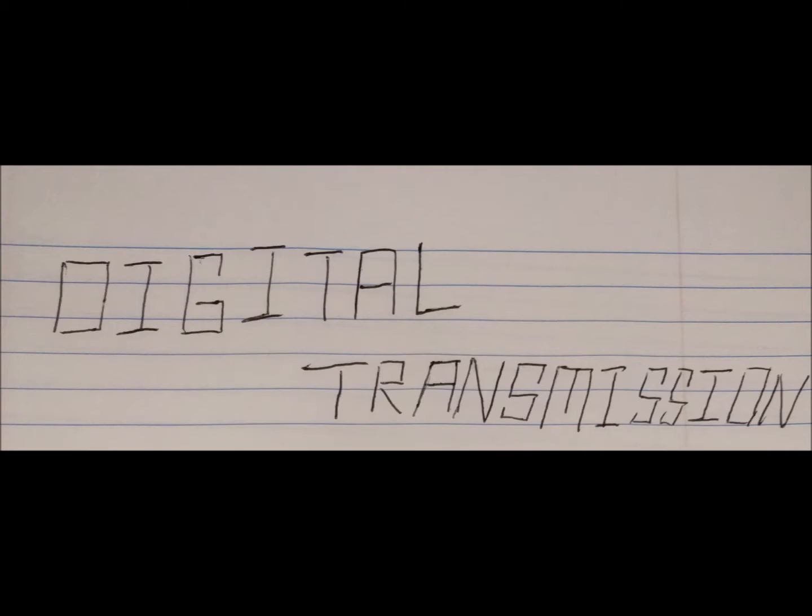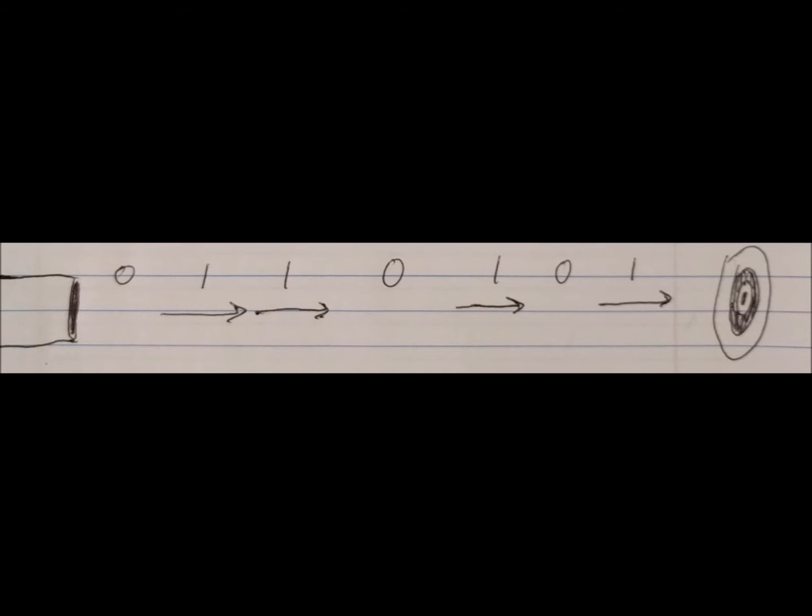How does this transmit data? You have digital transmission where a transmitter can send a signal and then not send a signal, and in that way, the receiver can capture a set of zeros and ones that can be translated into actual data.